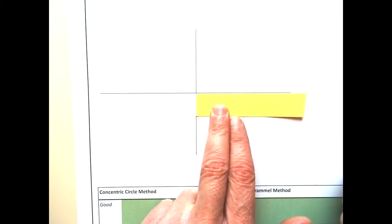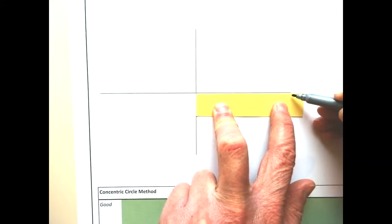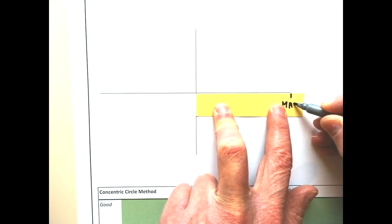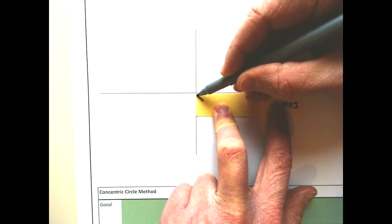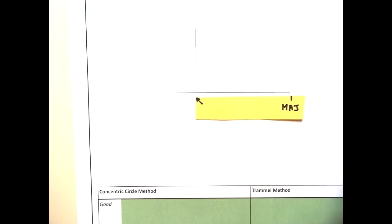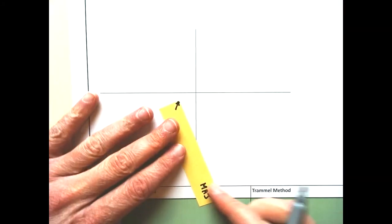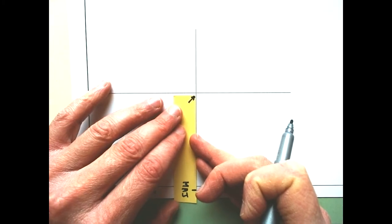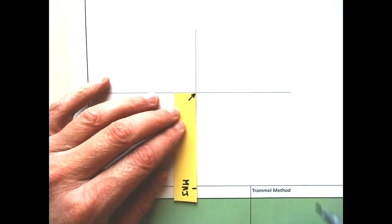Line it up along the major axis as shown and mark off the length of the major axis. Also mark off the center point. Next, mark off the length of half the minor axis. Try and be accurate with this.